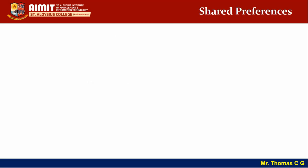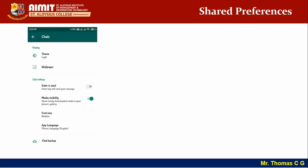Take WhatsApp as an example — specifically the chats settings screen. You have options like theme (light or dark), wallpaper, enter-is-send, media visibility, and font size. If the user chooses large font size and clicks OK, all chats should reflect that change. Where do you store that preference? These are small settings — storing them in a plain file is tedious and unorganized, and using a full SQLite database is overkill for something so simple.